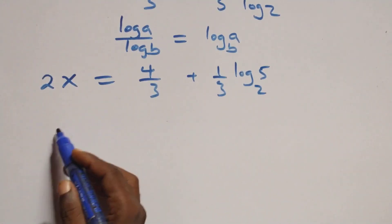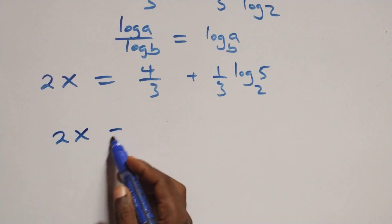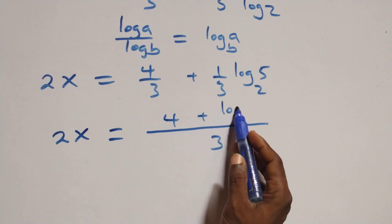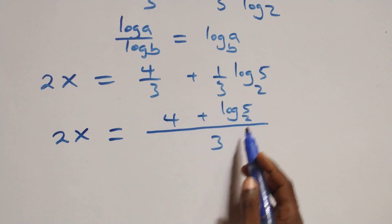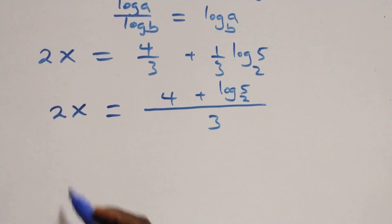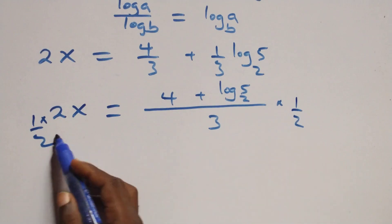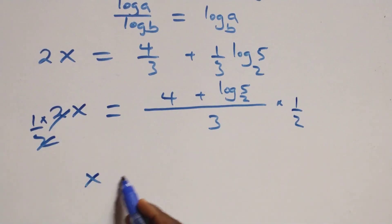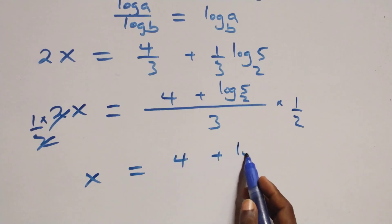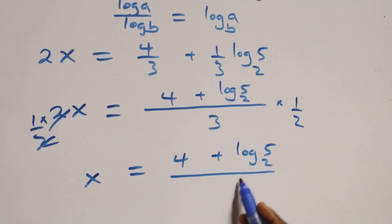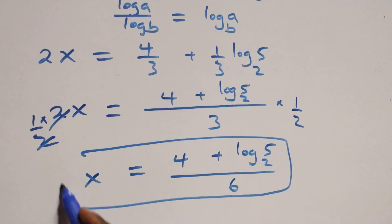We bring this together as one fraction, so 2x equals to (4 plus log 5 base 2) over 3. Multiplying both sides by 1 over 2, the 2s cancel each other. We have x equals to (4 plus log 5 base 2) over 6. That is the value of x in this problem: x equals to (4 + log₂5) / 6.